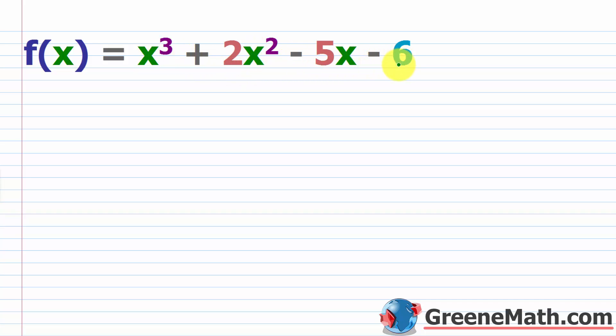I'm going to tell you that there is going to be a zero that occurs between negative 2 and zero. So between these two numbers, there will be a zero — meaning there's some value I can plug in for x and the function's value would be zero.